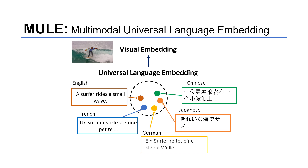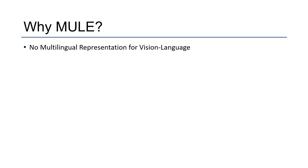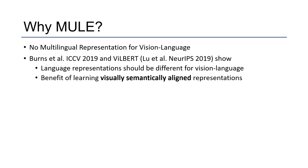MULE stands for Multimodal Universal Language Embedding. The idea is to map multiple languages — like English, French, German, Japanese, Chinese and so on — into a universal language embedding before mapping it into a multimodal space for matching with images. The motivation behind MULE is that even though there are existing multilingual representations for text-only modeling, there hasn't been any multilingual representation for vision and language. At the same time, prior work such as Burns et al. ICCV-19 and Lou et al. NeurIPS-19 have shown that language representations should be different for vision language tasks, with a clear benefit in learning semantically aligned visual representations.